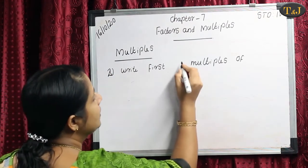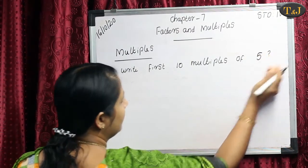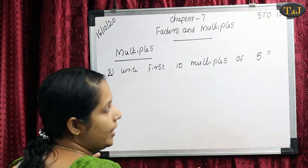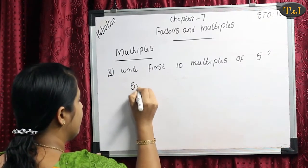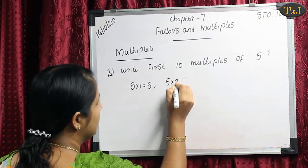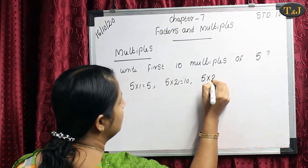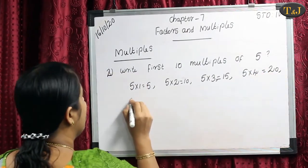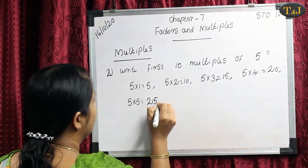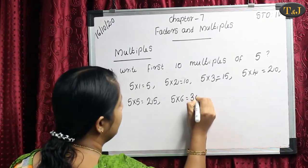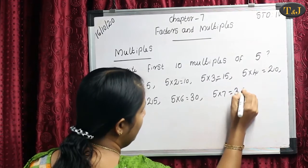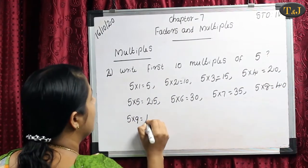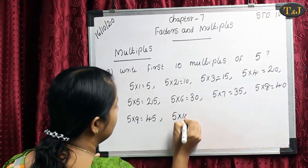Our second example: Write the first 10 multiples of the number 5. Multiples means that when we multiply a number by 1, 2, 3, etc., its result is known as its multiple. Here our number is 5. So: 5×1 are 5, 5×2 are 10, 5×3 are 15, 5×4 are 20, 5×5 are 25, 5×6 are 30, 5×7 are 35, 5×8 are 40, 5×9 are 45, 5×10 are 50.